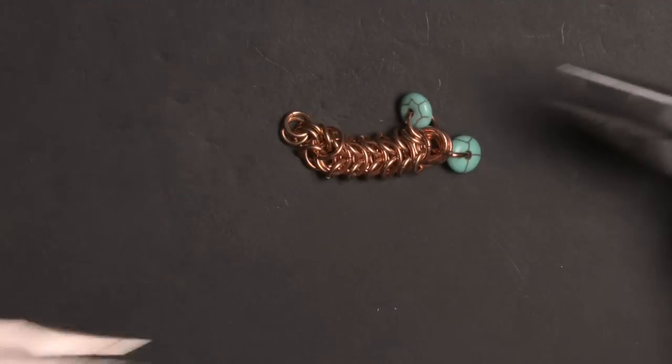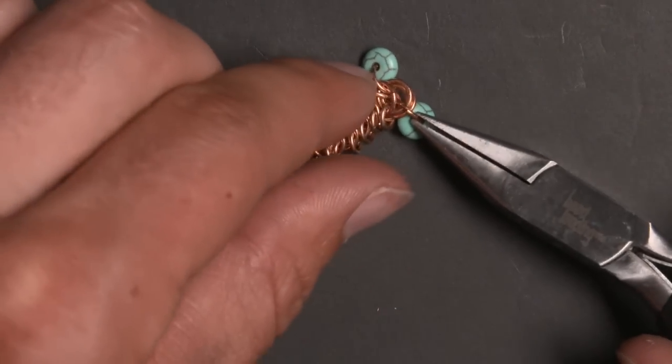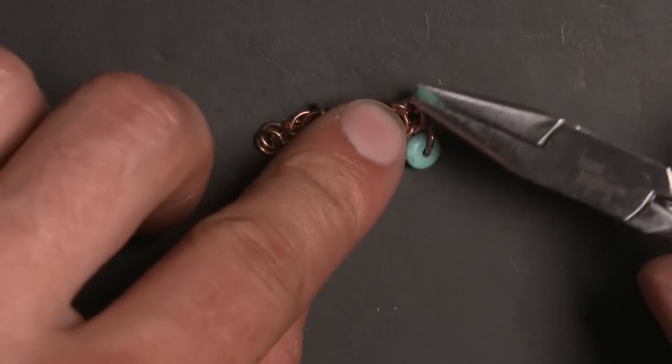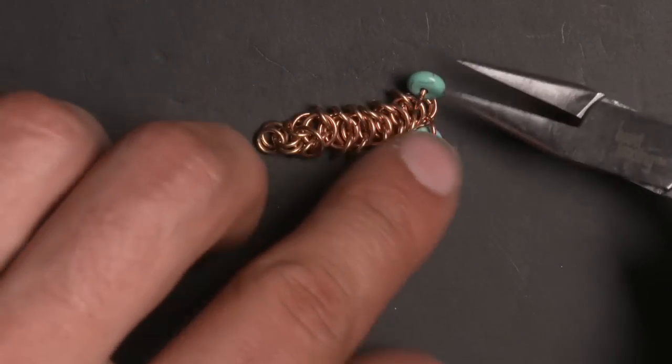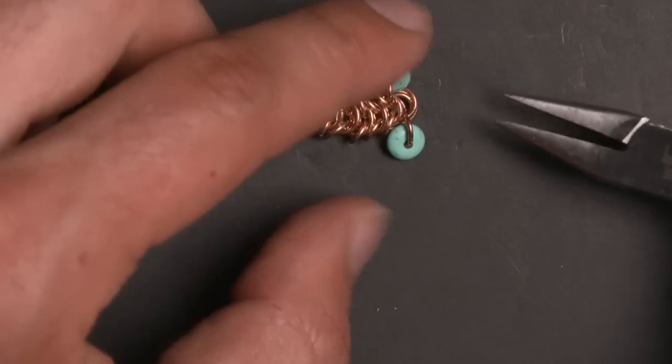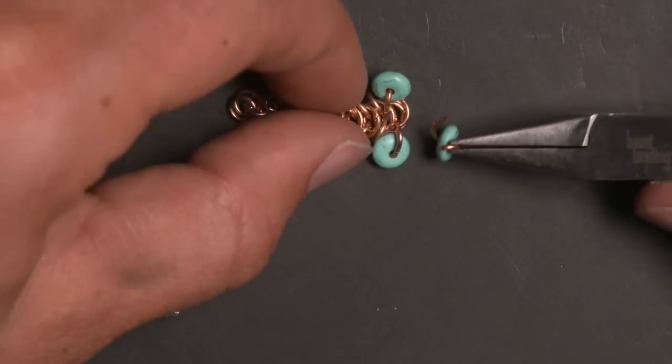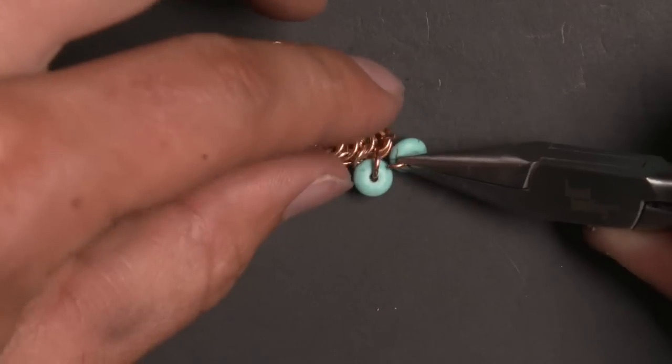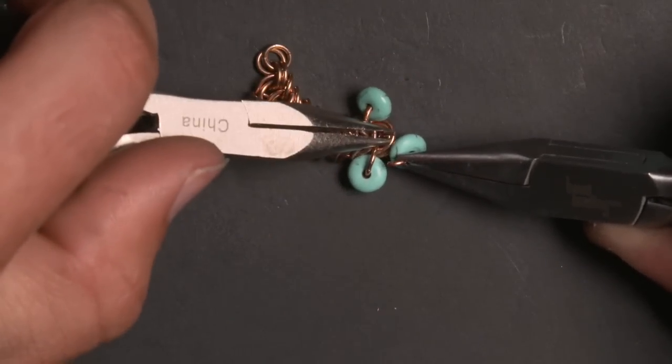Now we're going to add three more turquoise beads and these three rings just need to go through the last three links of the box chain - the two large and the one small.